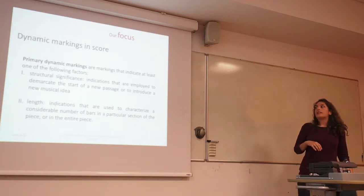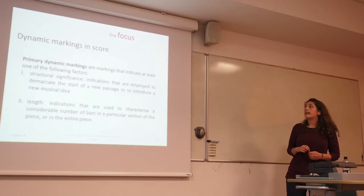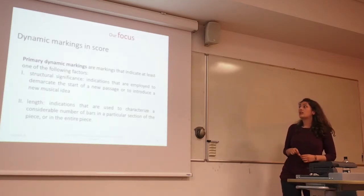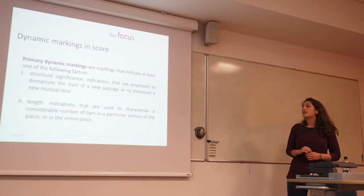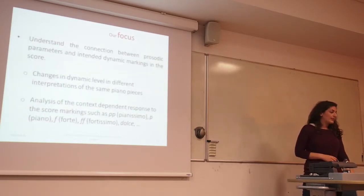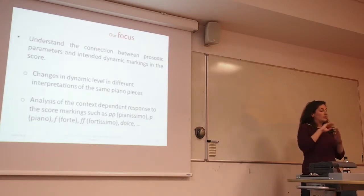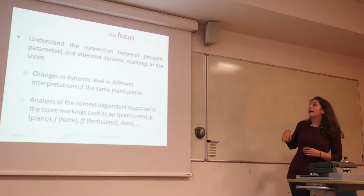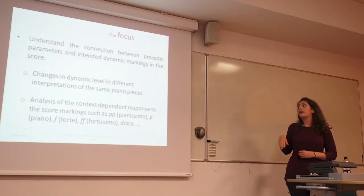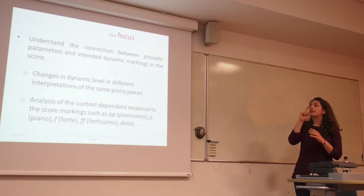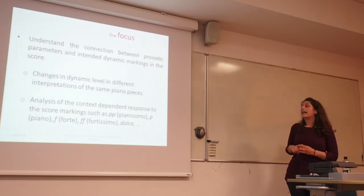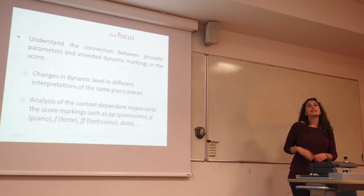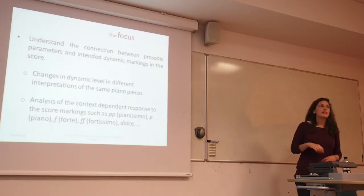We follow the definition of primary dynamic markings as indicating at least one of the following factors: structural significance — indications employed to demarcate the start of a new passage or introduce a new musical idea — and length, meaning indications used to characterize a considerable number of bars in a section or the entire piece. We want to understand the connection between prosodic parameters and intended dynamic markings, such as pianissimo, piano, forte, and text indications like dolce and poco più.